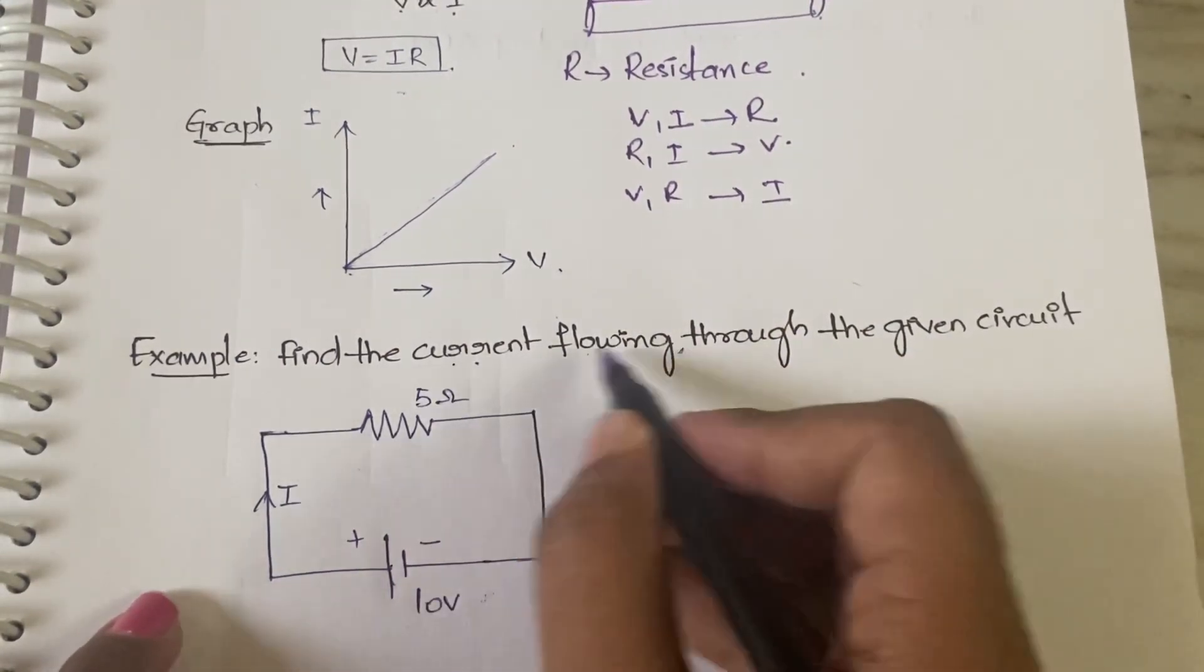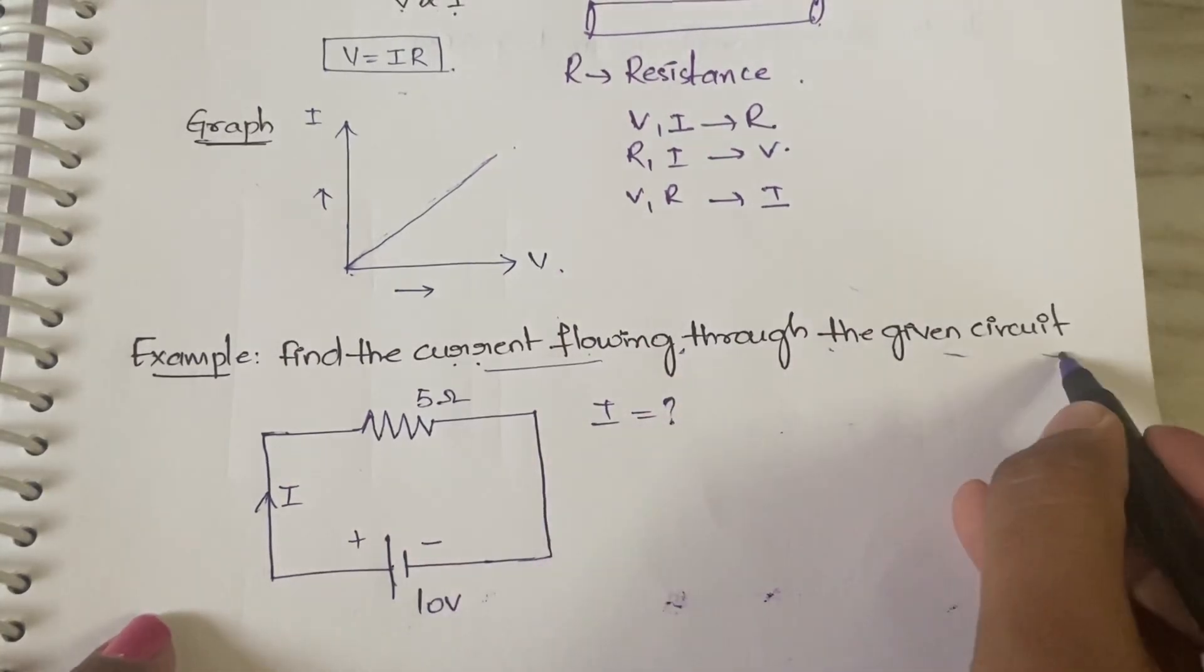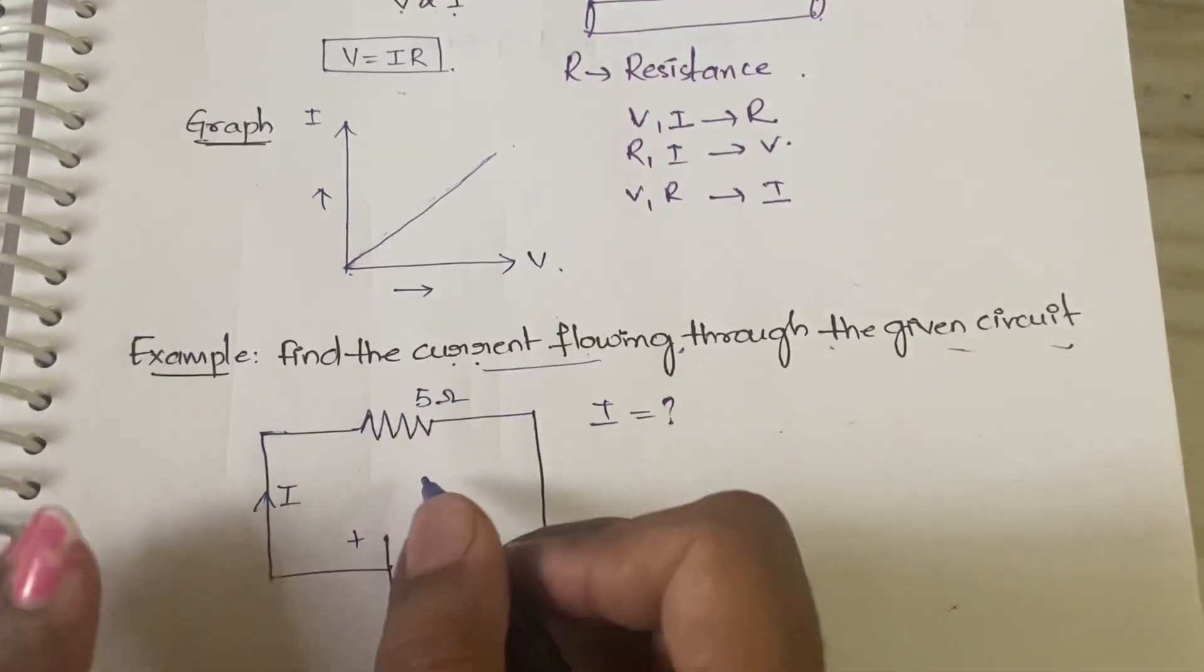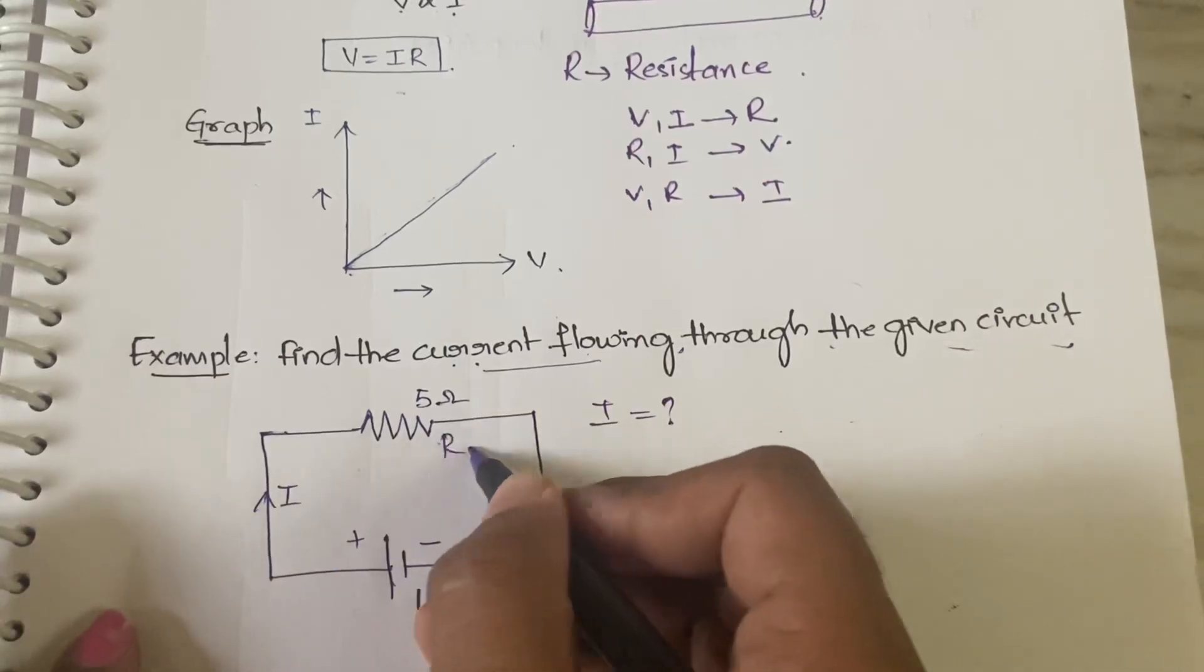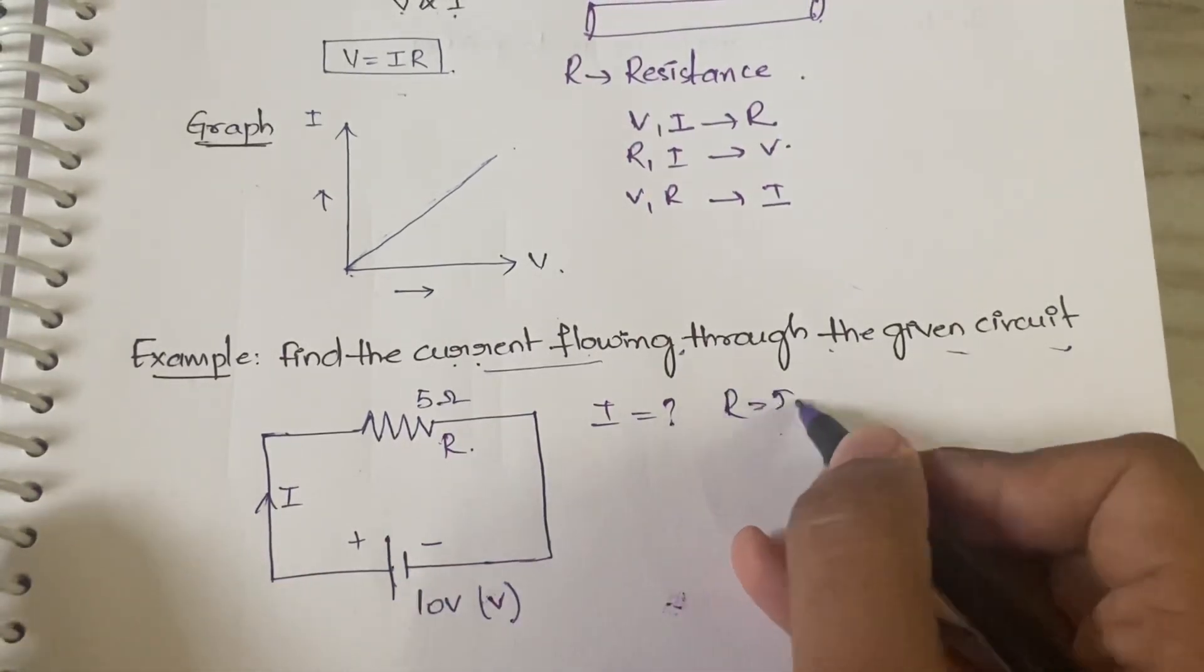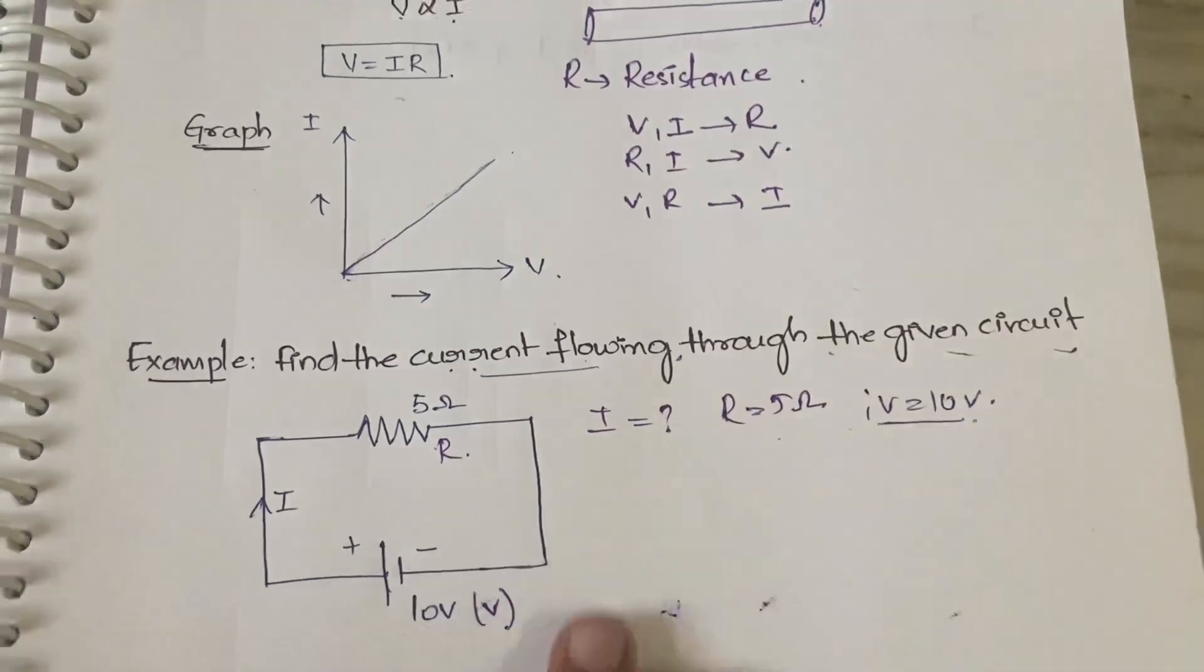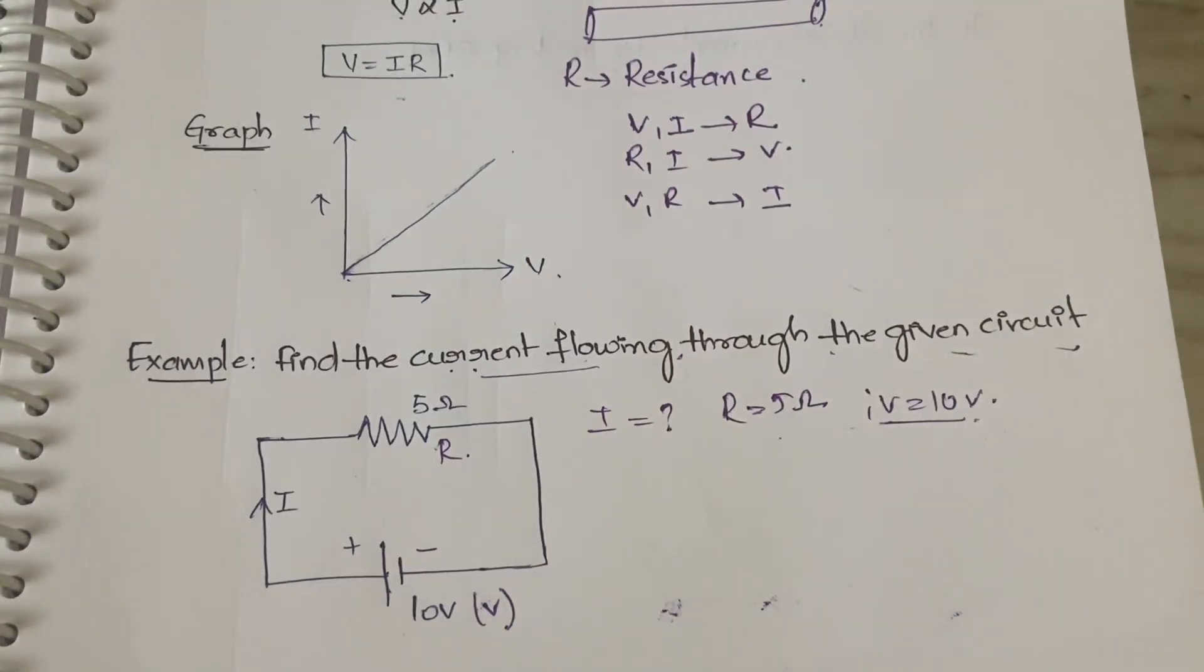So he said find the current flowing, so current I is equal to question mark, flowing through the given circuit. In the given circuit, what do we have? We have resistance and voltage. So resistance is equal to 5 ohms and voltage is equal to 10 volts.